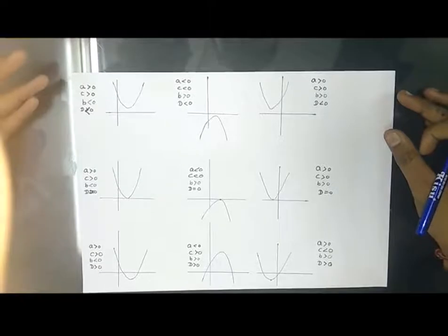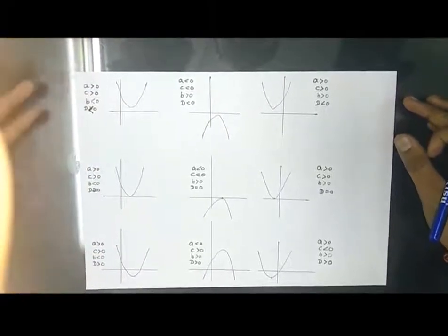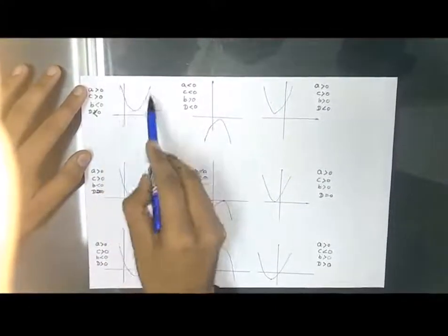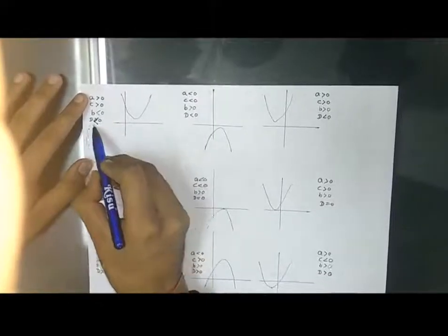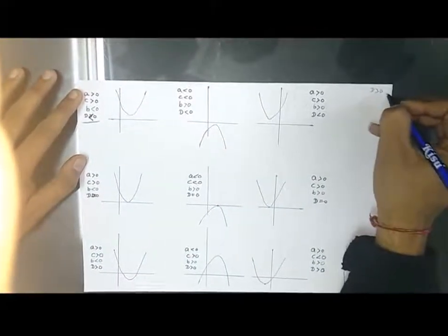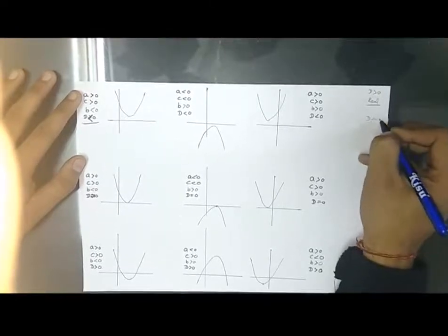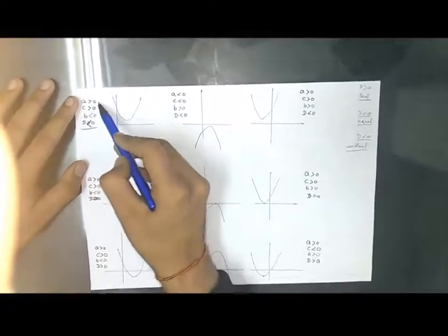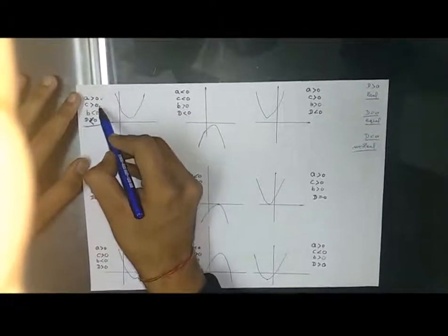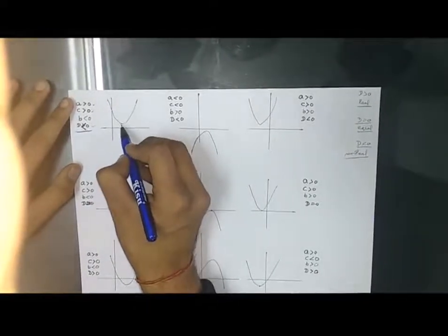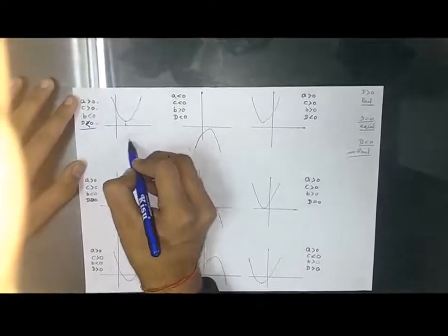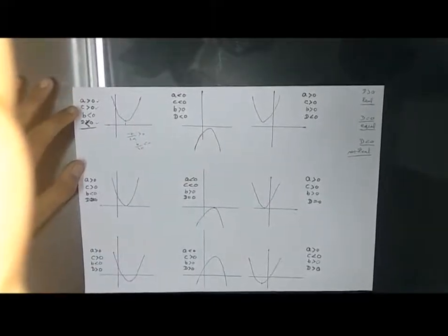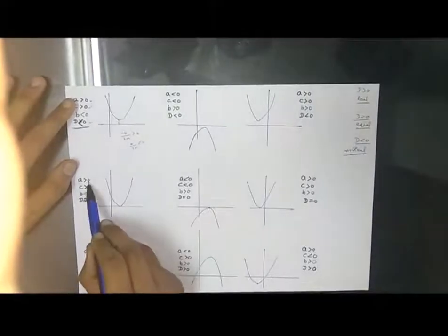Now I'll discuss different cases for the graph of quadratic functions — nine cases are shown. We need to understand the signs of a, b, c, and the discriminant D. In the first case, the graph does not cut the x-axis, meaning the polynomial has no real roots, so D < 0. If D > 0, roots are real and distinct. If D = 0, roots are real and equal. The graph opens upward, so a > 0. The graph cuts the y-axis at a positive point, so c > 0.